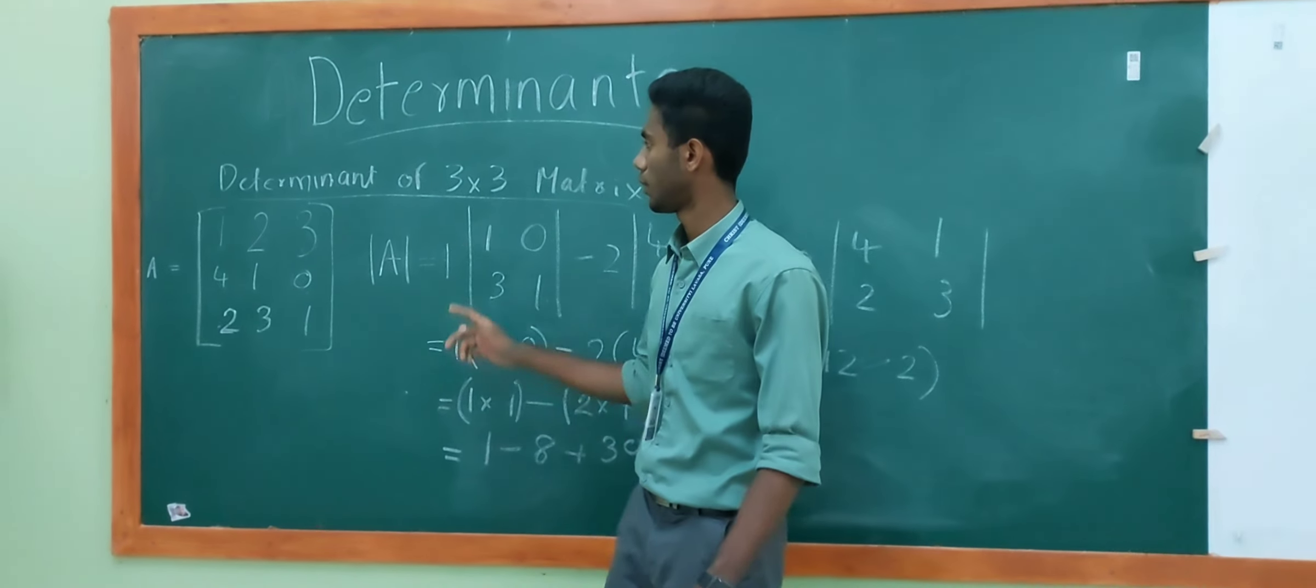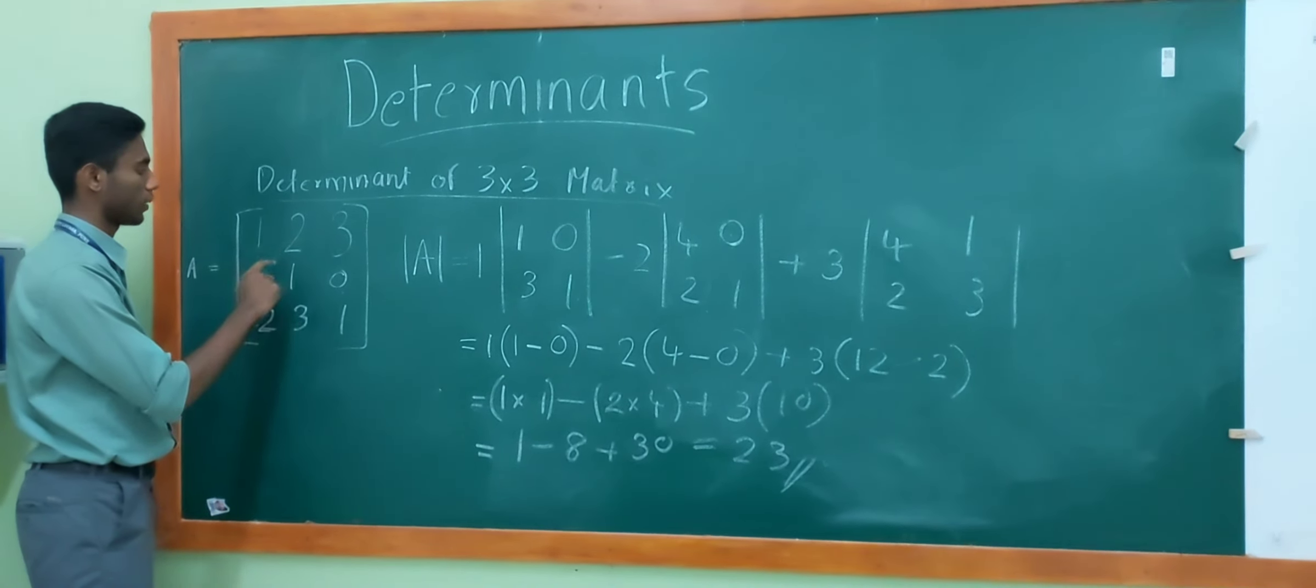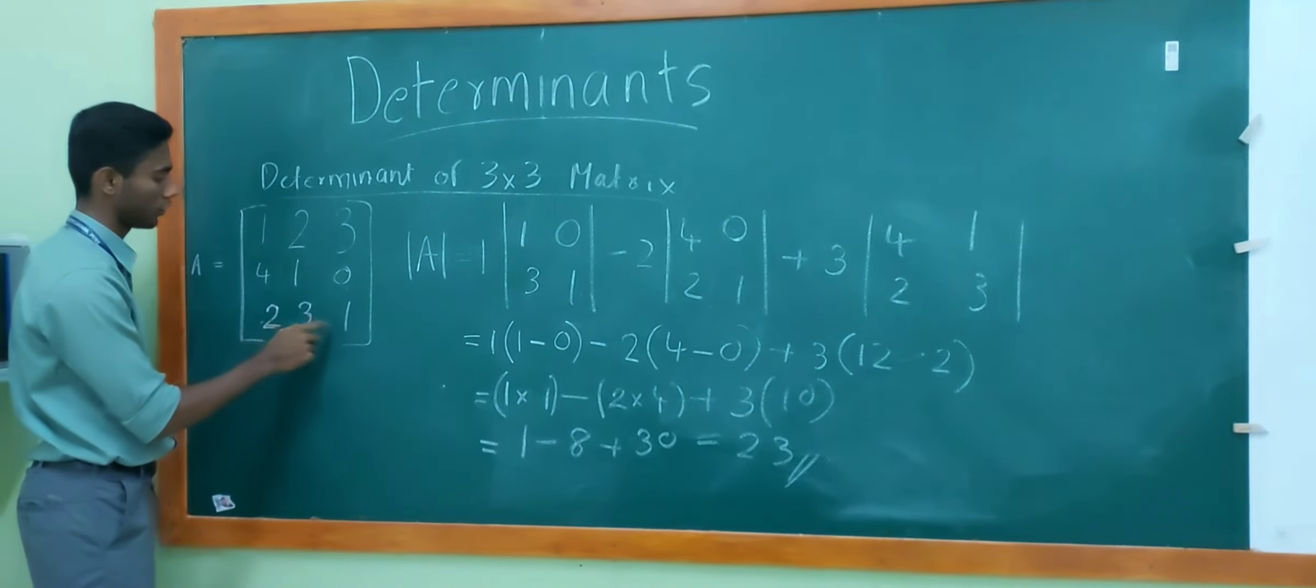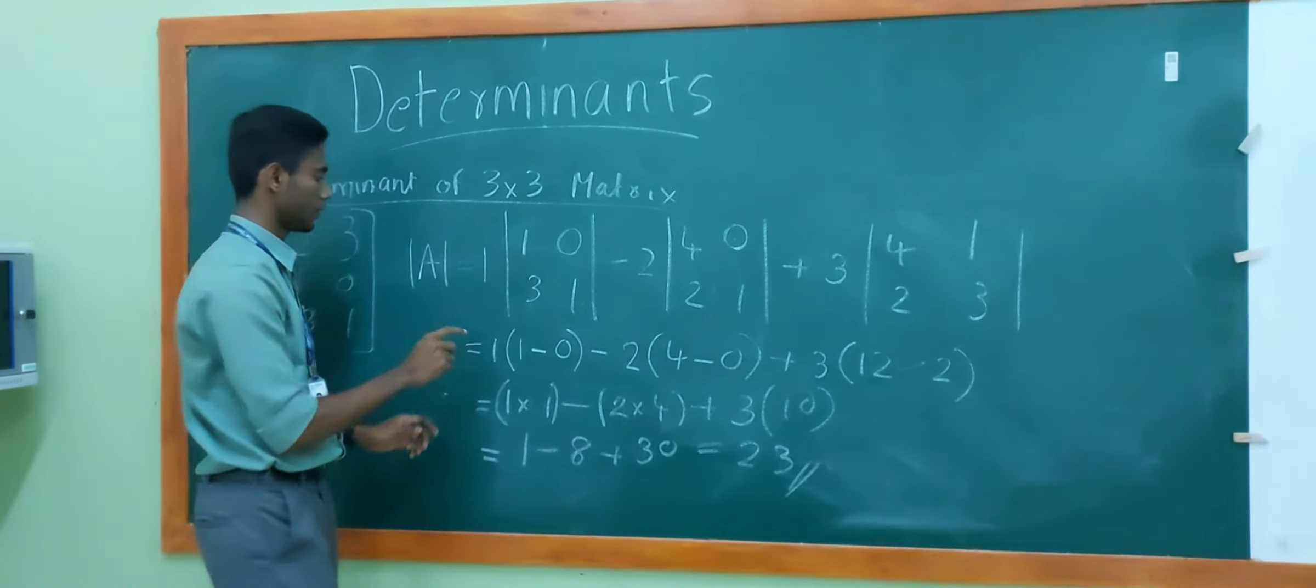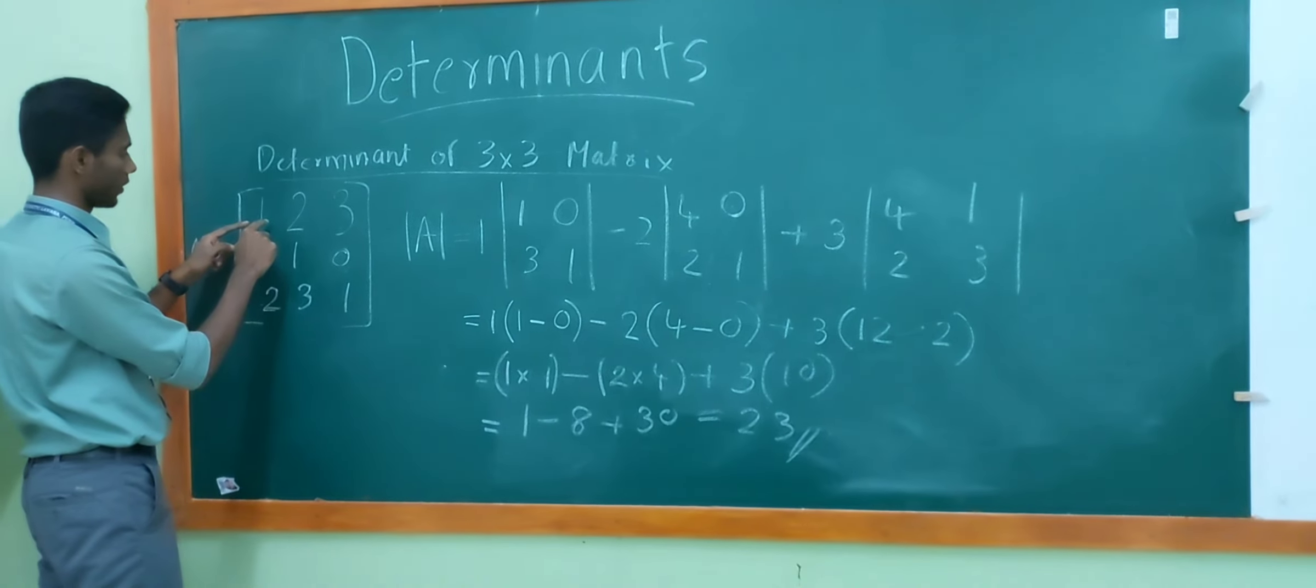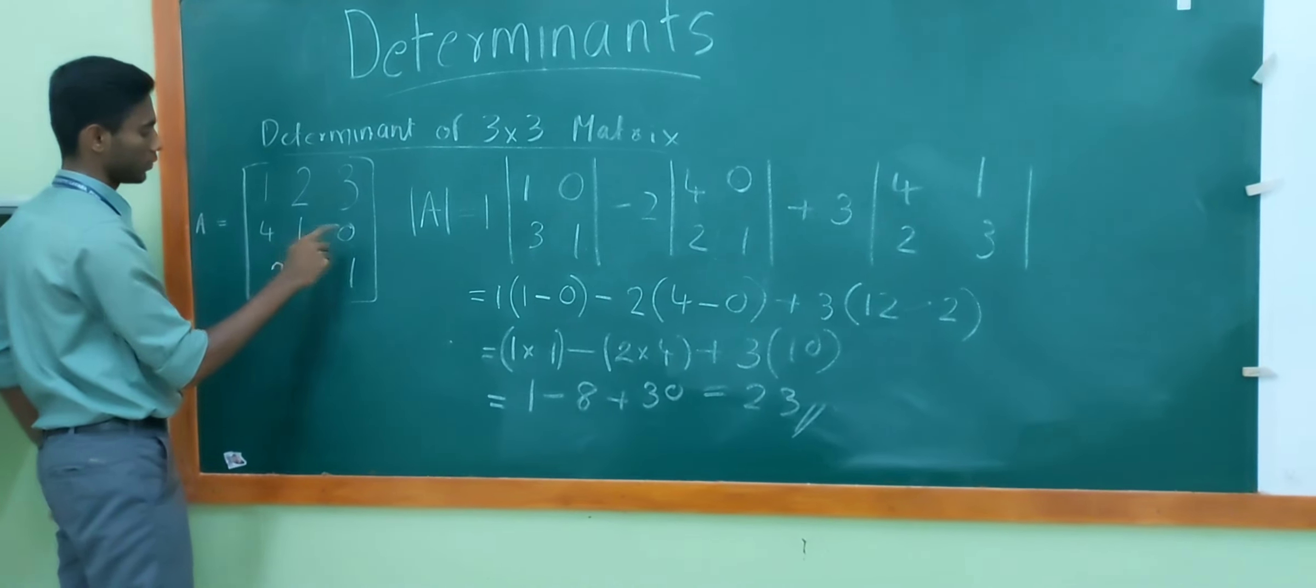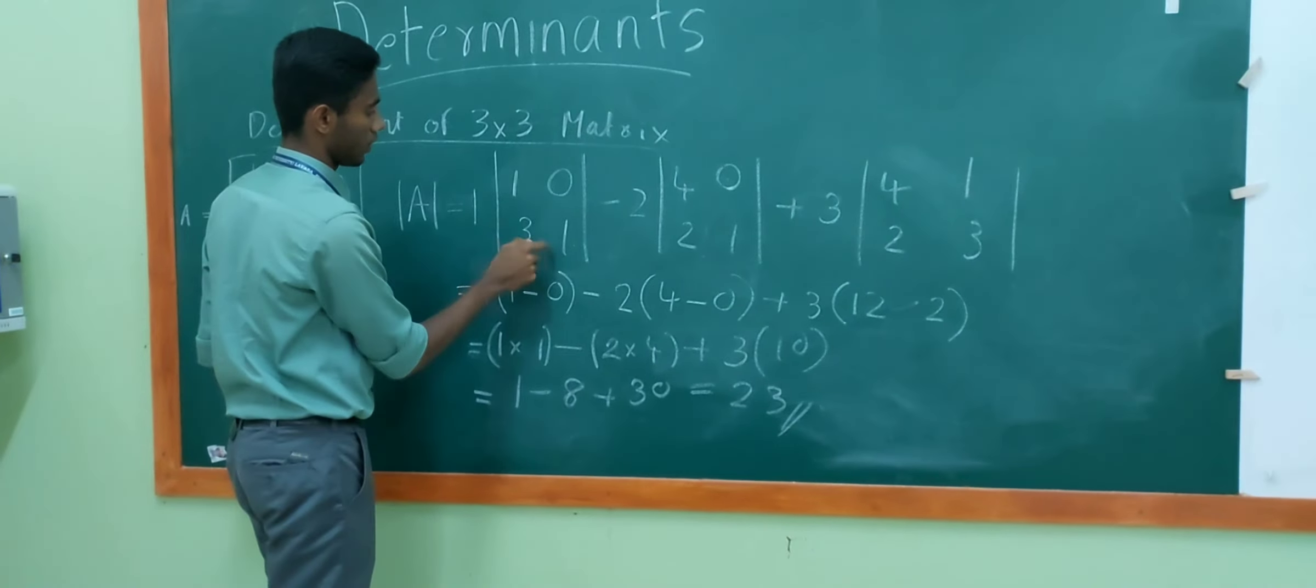Today, we are going to find the determinant of a 3x3 matrix. To find the determinant of a 3x3 matrix, we are going to use an example: 1, 2, 3, 4, 1, 0, 2, 3, 1. To find the determinant, we need to multiply the first element with the excluding numbers that come in the row and column of the first element. That is 1, 0, 3, 1.